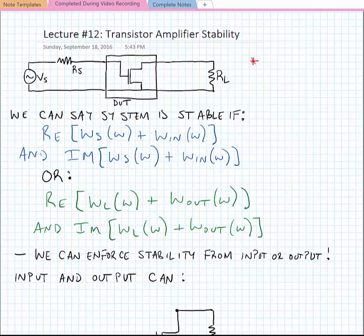Okay, so in today's lecture we're going to talk about transistor amplifier stability. Let's say that we have a transistor amplifier that's defined by the DUT in the box here, and it's connected to a source that has some fixed resistance R_s and a load at its output.